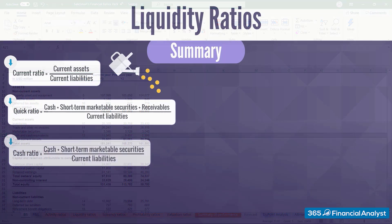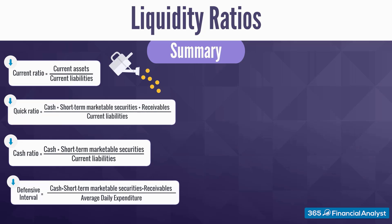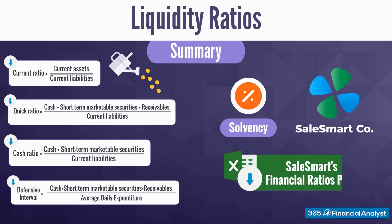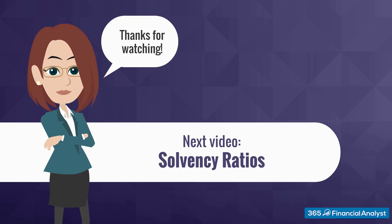To sum it all up, liquidity ratios are most advantageous when used in comparative form, both internally and externally. Keep in mind that the cash balance ultimately determines a firm's solvency because it is used to pay long-term debt obligations as well. The less liquid an organisation is, the greater the risk it will struggle to service its non-current debt. Don't forget to check out SalesSmart's Financial Ratios Pack in Excel in the downloadable resources — use the blank version to practice what you've learned. Thanks for watching!